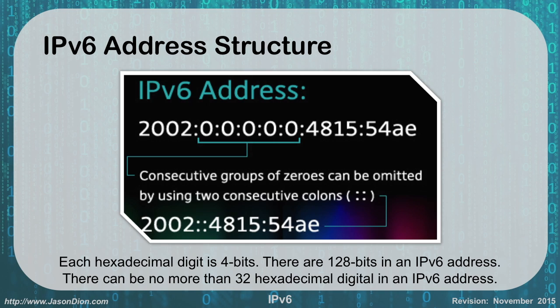The reason I say up to 32 is because we have this thing called the double colon — you can see it here after the 2002 — which can abbreviate multiple areas where there are zeros. If you had five sets of four zeros, represented by a single zero each because leading zeros can be dropped, they can all be compressed into a double colon representing that blank space of zeros. If I were to rewrite this address in full 32 characters, I would put 2002 colon and fill in all the rest with zeros.